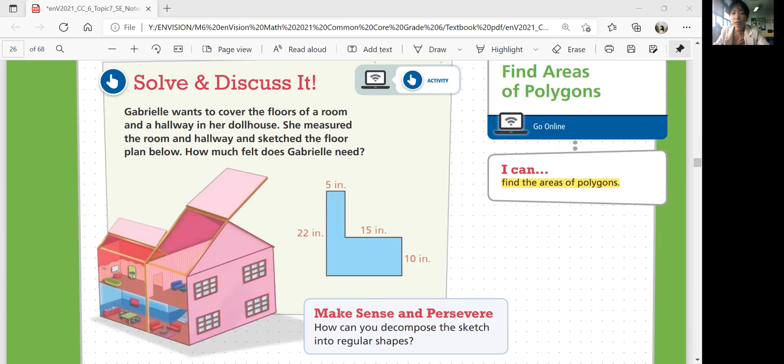So last lesson, we learned how to decompose shapes that we don't really know how to solve for, like trapezoids and kites. This one could be decomposed into rectangles, right?